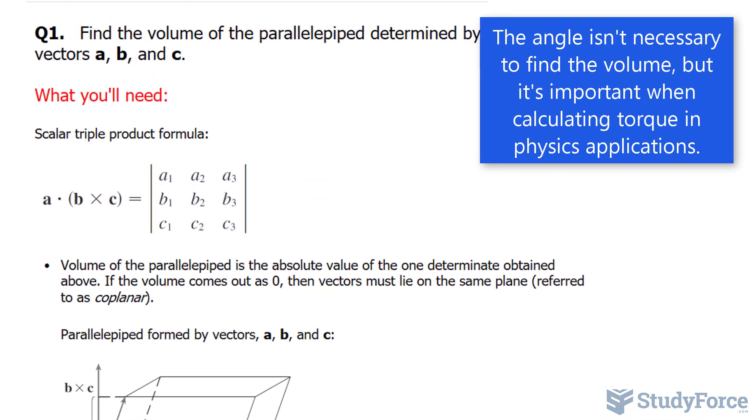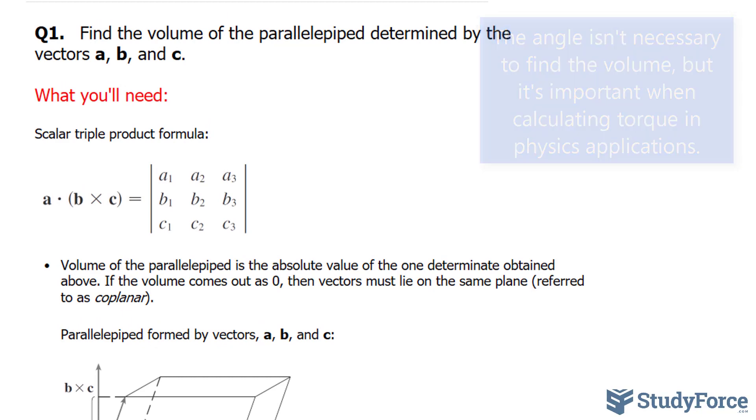It turns out that if you find what is known as the scalar triple product, you end up finding the volume of the parallelepiped. And that can be summarized right here, where if you find the determinant of the three vectors, you automatically find the volume of the 3D parallelogram. Now, of course, if you forget this formula, you can always remember that it is the dot product of a times the cross product of b and c.